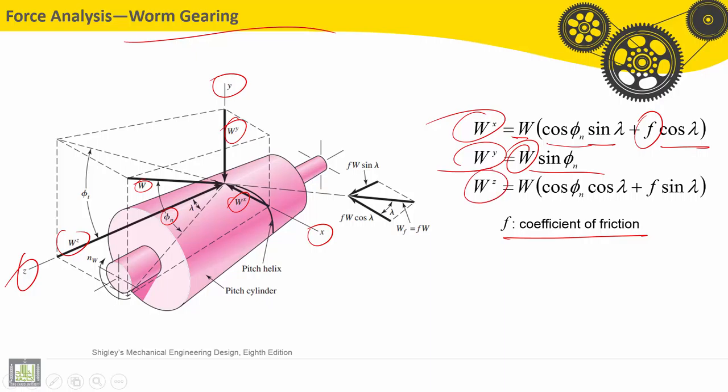And the force along Z axis is equal to the resultant force multiplied by cosine phi N, cosine lambda, plus the coefficient of friction times sine lambda. Thank you.